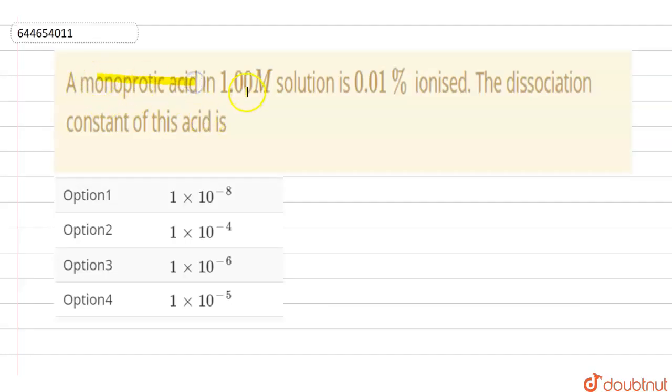Hello students, the question is: a monoprotic acid in 1 molar solution is 0.01 percent ionized. The dissociation constant of this acid is? Whenever we take a monoprotic acid, monoprotic acid is that which gives one H+ ion on dissociation.